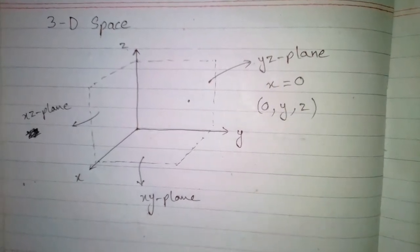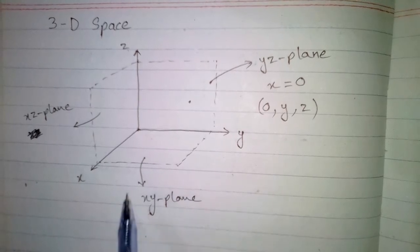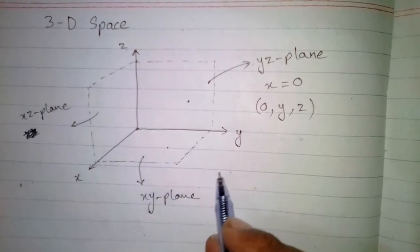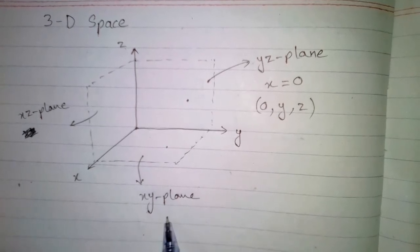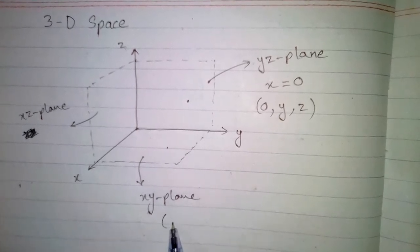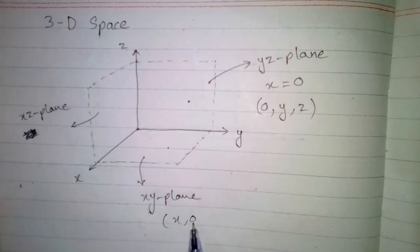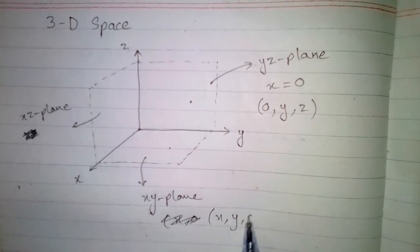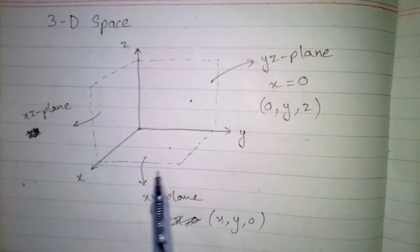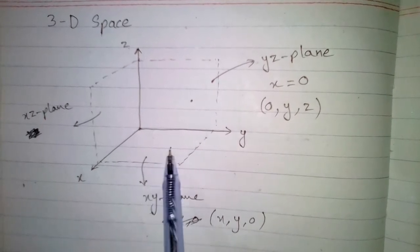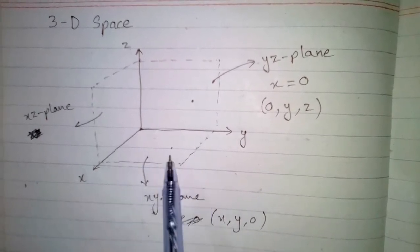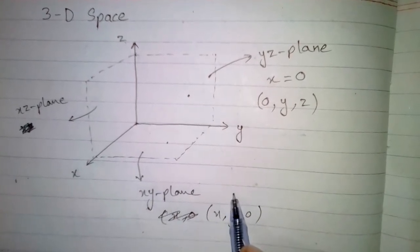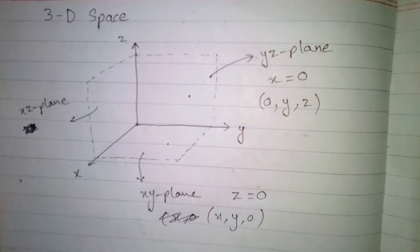Similarly, on the XY plane, if we take any point, this point is of the form (x, y, 0), because the Z component on the XY plane is always zero. The equation of the XY plane is Z equals zero.